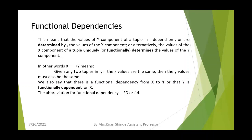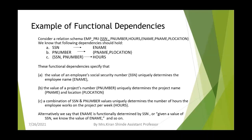This means that the values of the y component depend on or are determined by the values of the x component, or alternatively, the x component uniquely determines the value of the y component. We say there is a functional dependency from x to y, or that y is functionally dependent on x. The abbreviation for functional dependency is FD. Consider a relation schema employee project, named emp_PRJ, with attributes SSN, p number, hours, p name, and p location.